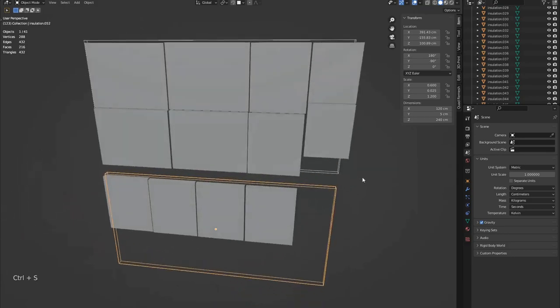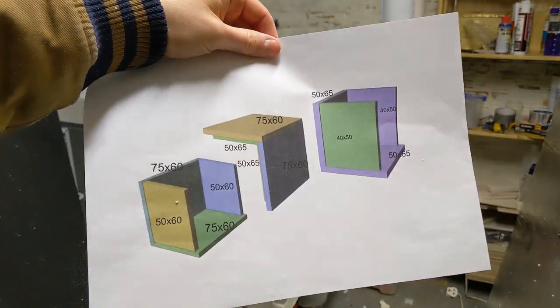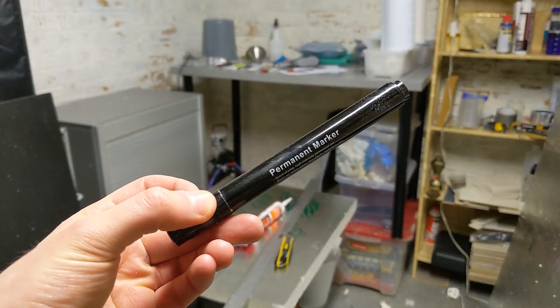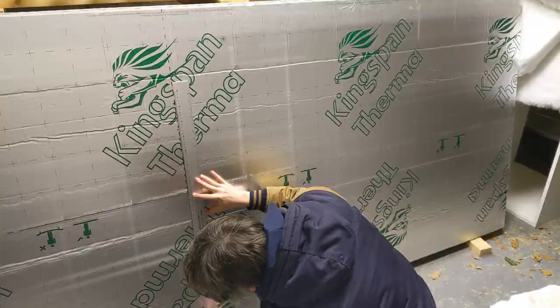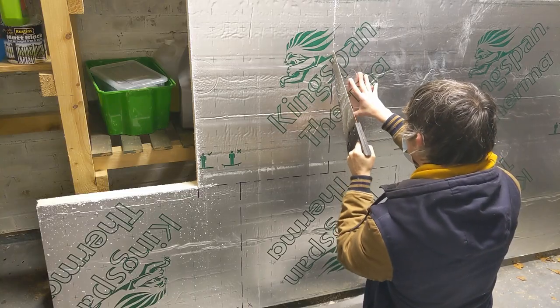I printed off a couple of cheat sheets to keep an eye on while in the garage so we can make sure things are going to plan. Using a marker and a big ruler, we can measure out and mark up the panels we will need to cut.